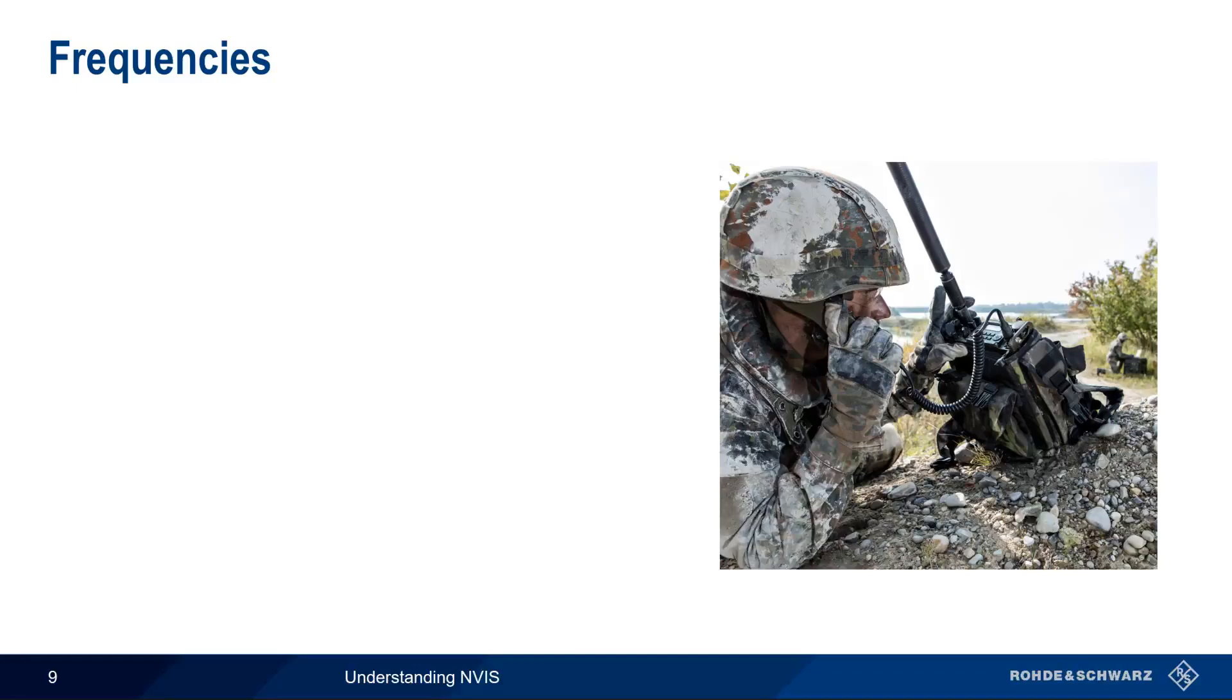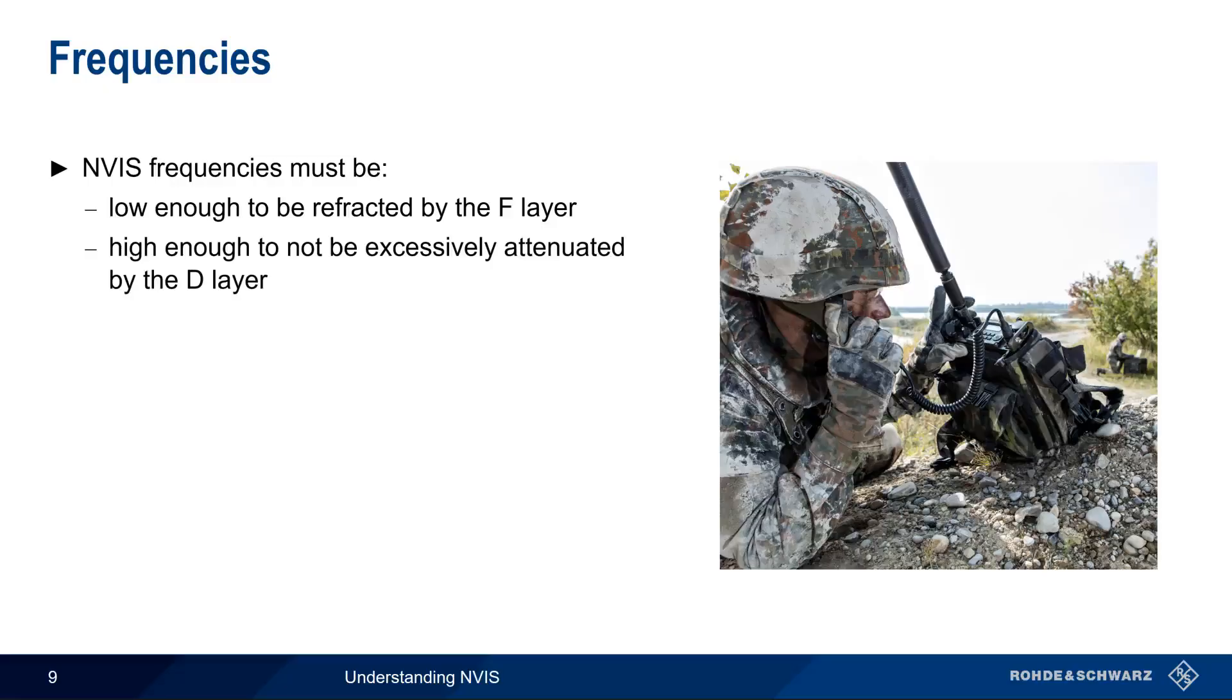To make effective use of NVIS, we must choose frequencies that are low enough to be refracted by the F layer of the ionosphere when arriving with a very high incidence angle. Signals with too high of a frequency will simply pass through the F layer and continue on into space. NVIS also requires the use of frequencies that are high enough that they're not excessively attenuated by the D layer. Remember that D layer absorption is highest for low-frequency signals. In order to balance out these two somewhat conflicting requirements, NVIS operation uses frequencies in the range of approximately 2 to 10 MHz.